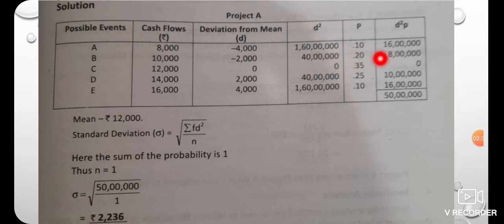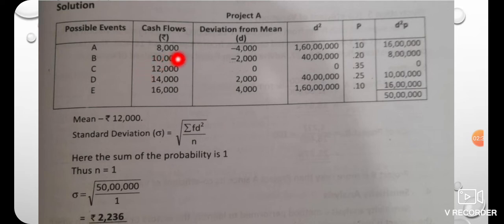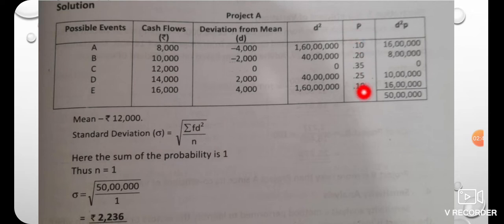In this example, cash flows range from 1.10 to 16 lakhs and 1.20 to 8 lakhs. We multiply by the probability. The probability of each cash flow outcome is given, and we compute the total expected cash flow based on these probabilities.